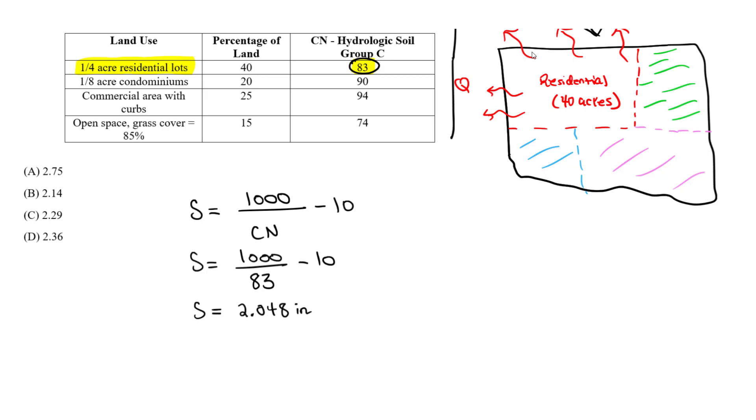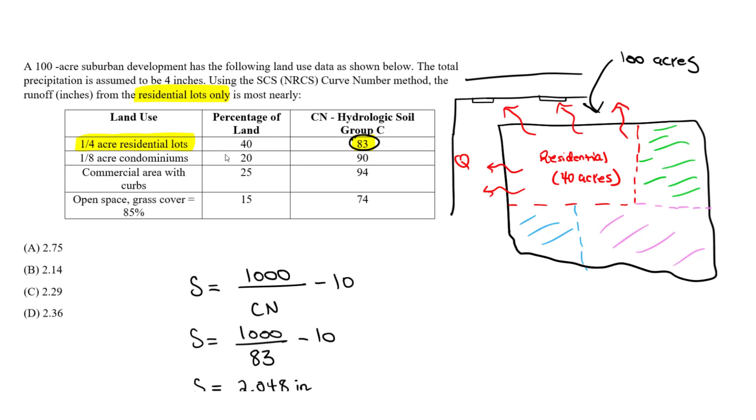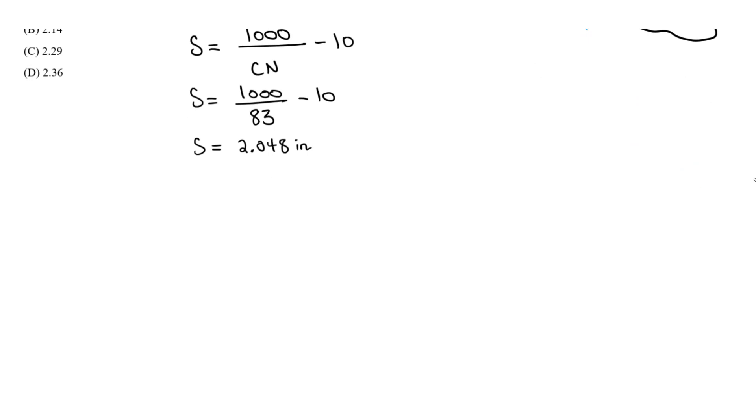So Q, using the equation from the handbook, is going to equal to (P - 0.2S)² divided by P + 0.8 times S. Don't forget to square this.